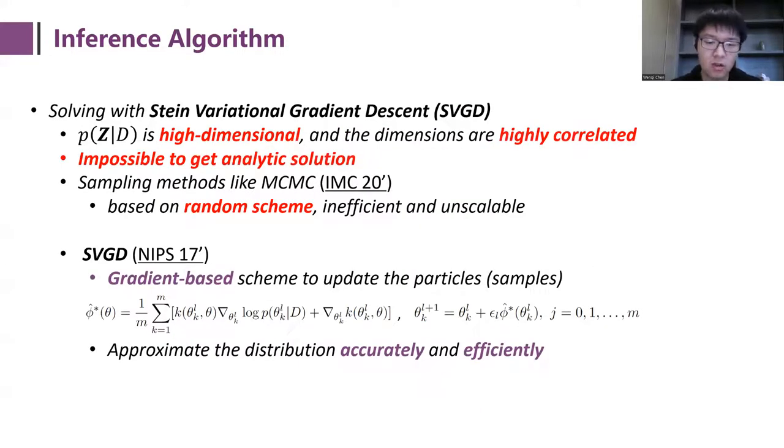However, the solution is non-trivial. The problem is located in a high-dimensional space and the dimensions are highly correlated, which makes it impossible to get analytic solutions. And sampling methods like MCMC utilized in prior work also become inefficient and non-scalable. So we introduce another Bayesian inference algorithm named Stein Variational Gradient Descent, or SVGD, to solve this problem. SVGD also uses particle-based methods to approximate target distribution. However, unlike MCMC, it's a gradient-based method which provides a deterministic way to update the particles and is much more efficient.